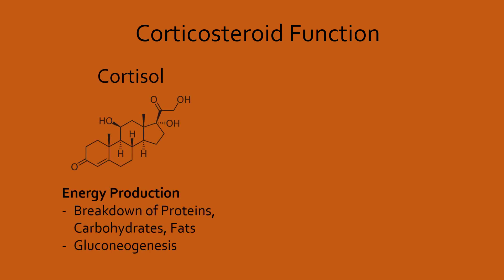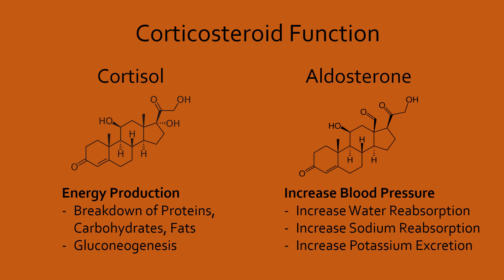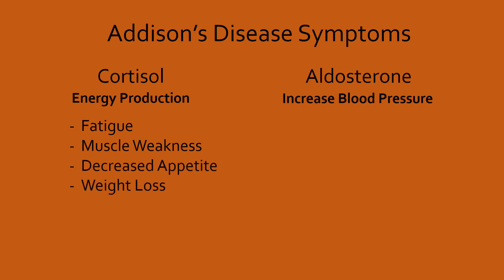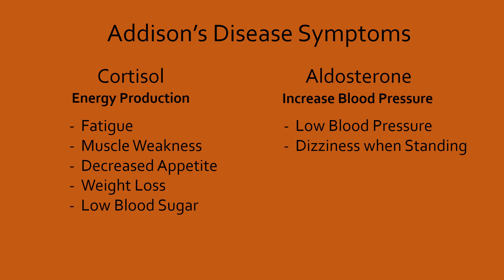Cortisol is primarily involved in energy generation, while aldosterone is primarily involved in increasing blood pressure. With less cortisol, the body is less capable of generating energy, so patients feel tired and weak. Decreased appetite often accompanies tiredness, leading to weight loss, and blood sugar is low from decreased gluconeogenesis. With less aldosterone, less water reabsorption occurs, causing low blood pressure. Lightheadedness from suddenly standing up is a direct consequence of low blood pressure, and a craving for salt may also be present since less sodium reabsorption occurs.